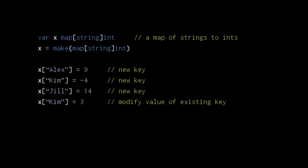To create and modify key-value pairs in a map, we use the subscript operator just as we do with arrays. If we assign to a key already present in the map, the assignment modifies the value of the existing key. If we assign to a key not already present in the map, a new key-value pair is created. When retrieving values, if the specified key isn't present in the map, we get a zero value. For example, the map of x has no key Franklin, so zero is assigned to a.